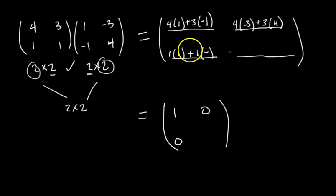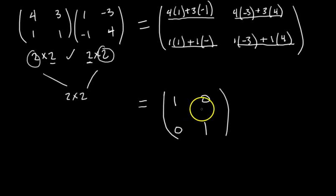And then the last one, this is the second row, second column. So we dot the second row by the second column. We get 1 times negative 3 plus 1 times 4, and that's negative 3 plus 4, that's 1. Oh, this is interesting. Our product matrix is the identity matrix.